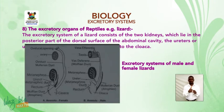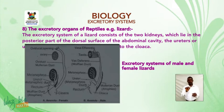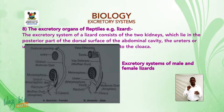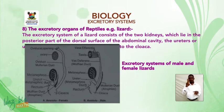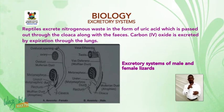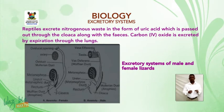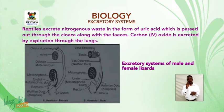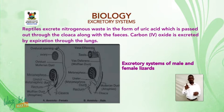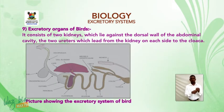In reptiles, for example the lizard, the excretory system consists of two kidneys lying in the posterior part of the dorsal surface of the abdominal cavity, and the ureters or urinary ducts which lead from the kidney to the cloaca. Reptiles excrete nitrogenous waste in the form of uric acid, passed out through the cloaca along with faeces. Carbon dioxide is excreted by expiration through the lungs.